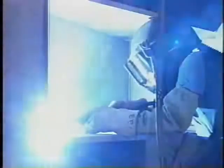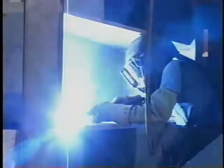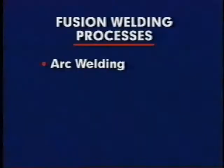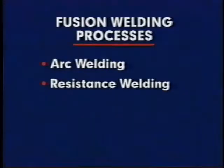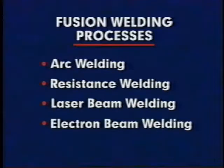In fusion welding, metal coalescence is created by melting a base metal and filler metal together, or by melting the base metal alone. The principal fusion welding processes are arc welding, resistance welding, laser beam welding, and electron beam welding.